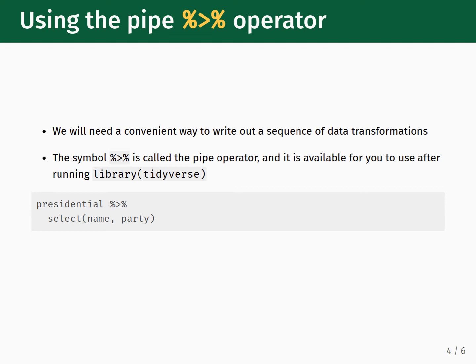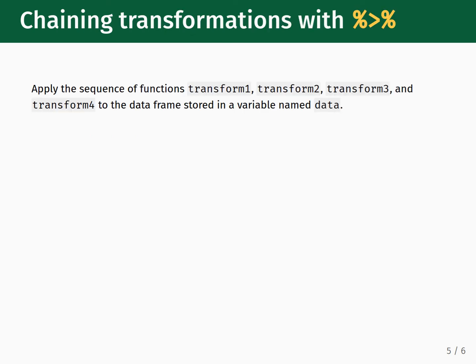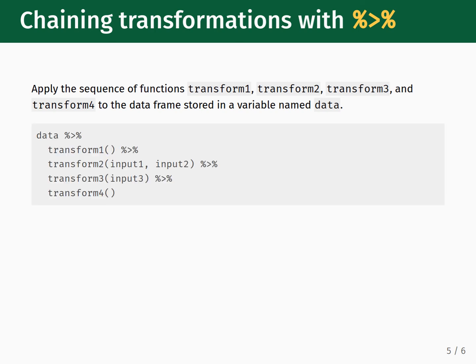If we had multiple transformations called transform1, transform2, transform3, and transform4 to apply to our dataset, and we wanted to apply them one at a time in that order, we could use the pipe operator to write our code as shown here. Note that this shows the order of transformations in a clear and readable format.